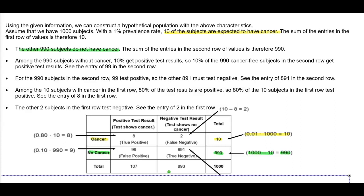Among the 990 subjects without cancer, 10% get positive test results. So 10% of the 990 cancer-free subjects get positive test results. We need to find 10% of 990, which gives us 99 — that is the false positive entry in the second row. For the 990 subjects in the second row, 99 tested positive, so the other 891 must be negative.